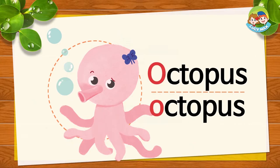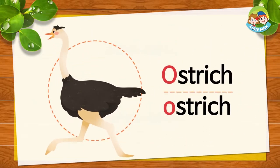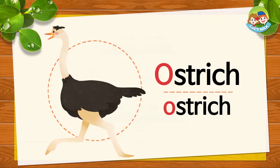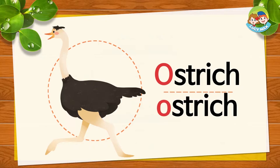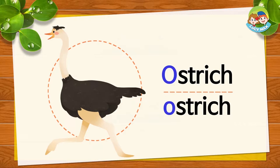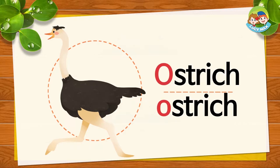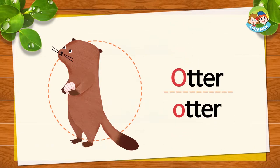Where does the octopus live? It lives in the ocean. This is an ostrich. Aw, aw, ostrich. Repeat after me: aw, aw, ostrich. Very good! Can an ostrich fly? No, it can't fly. This is an otter. Aw, aw, otter.